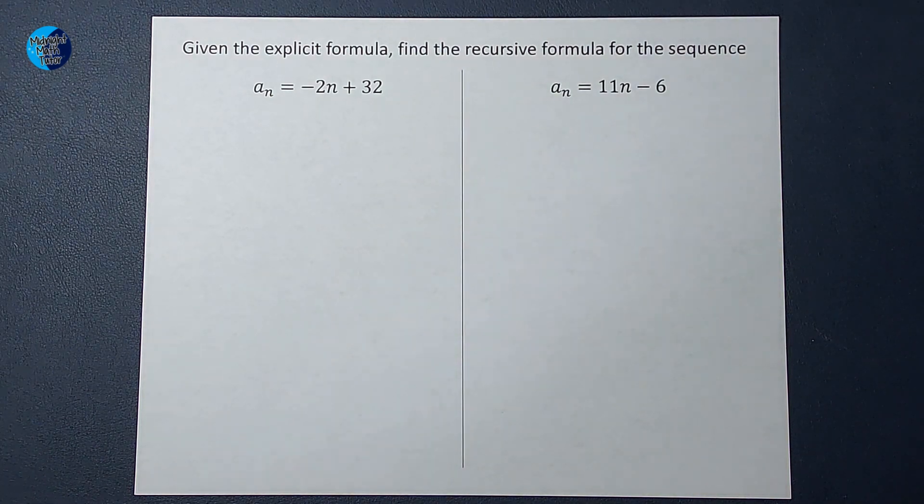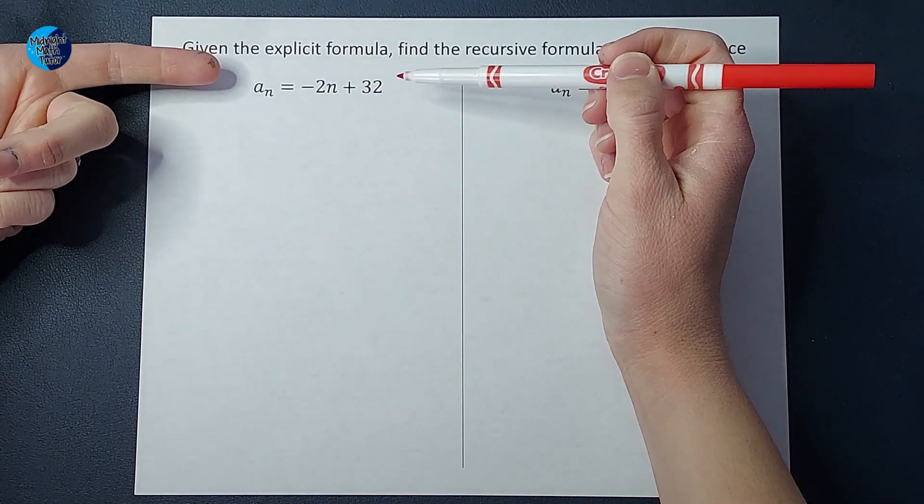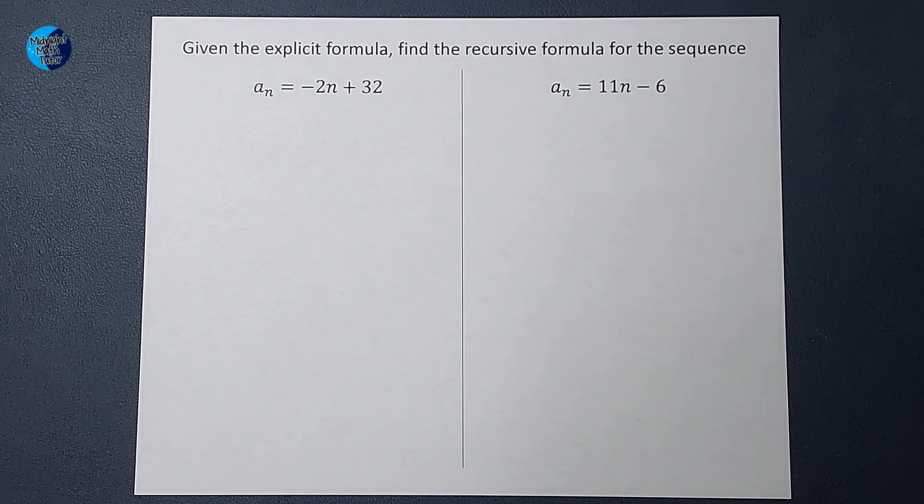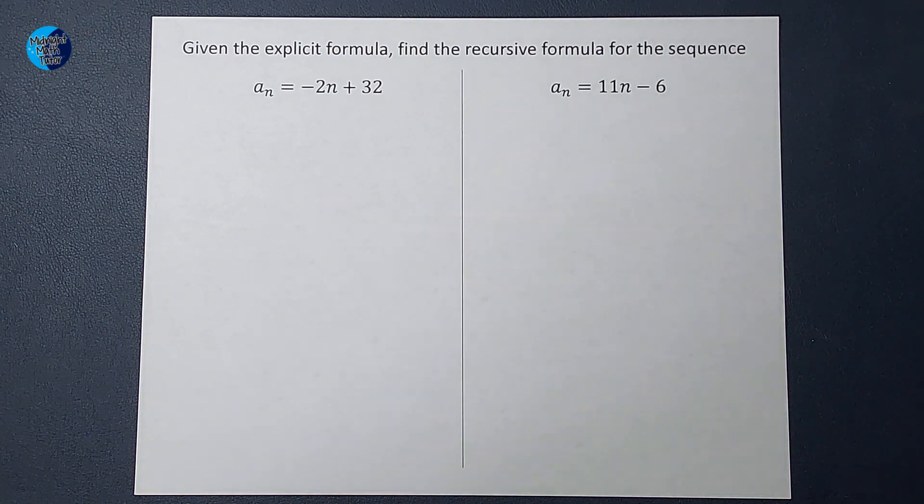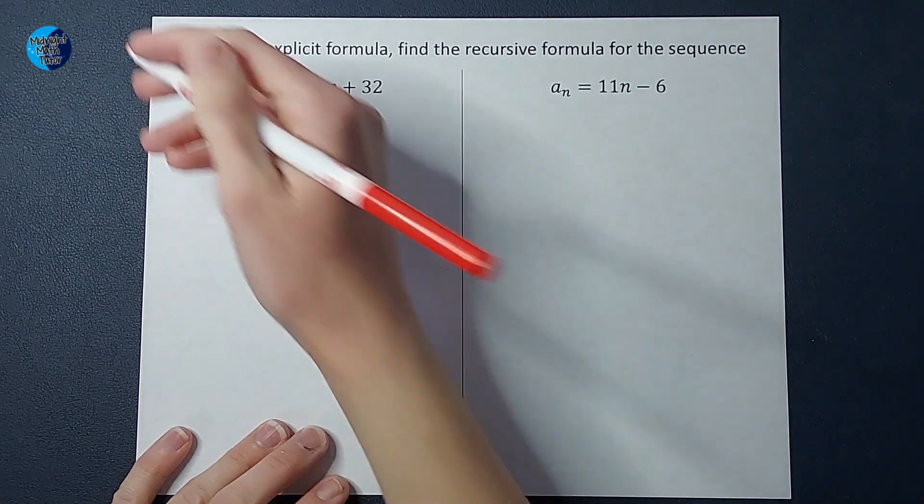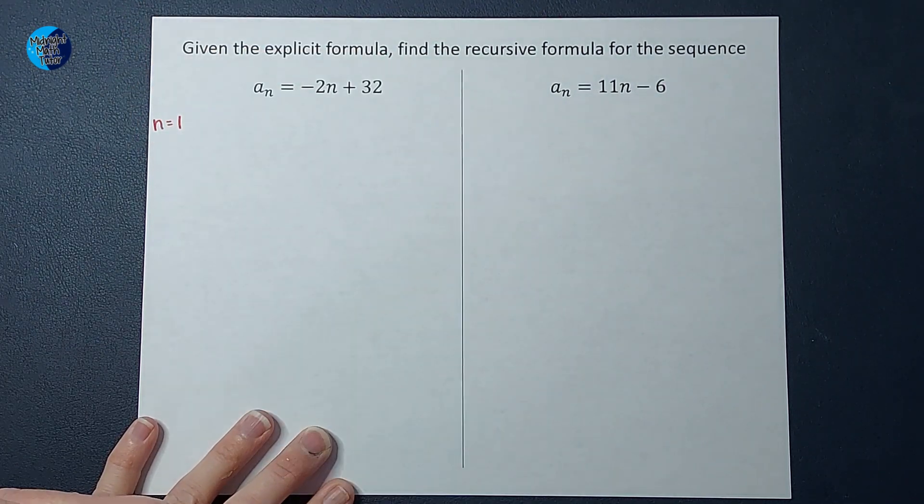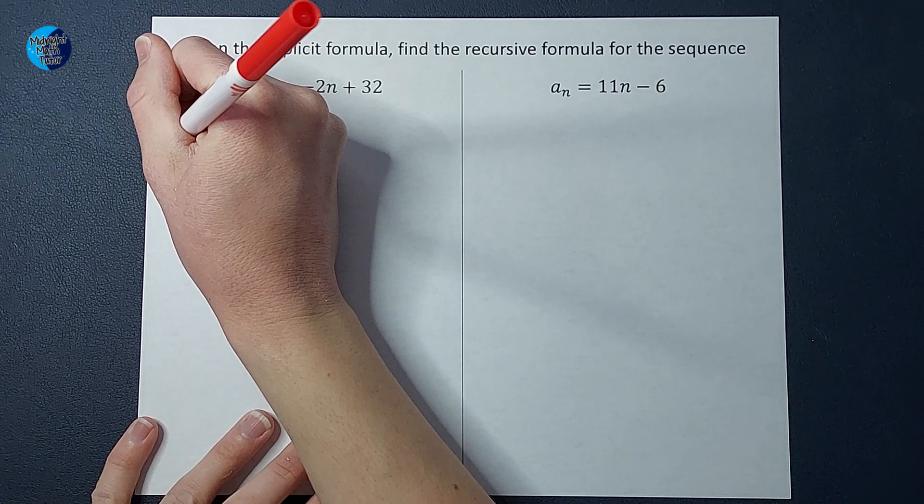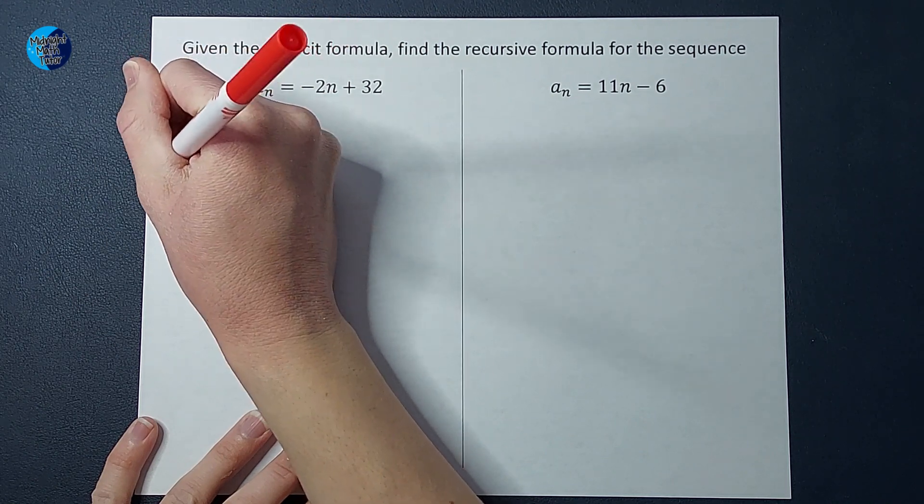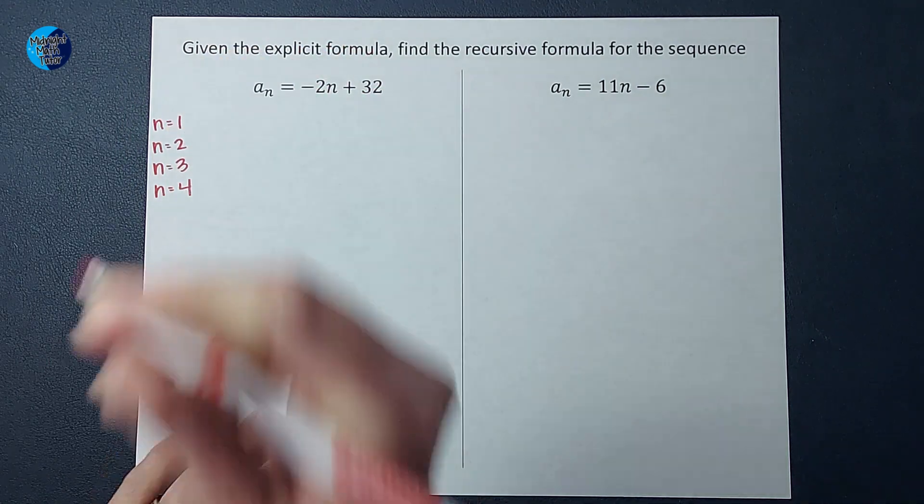So the first thing I am going to do to try and switch this from the explicit formula to the recursive is I want to figure out the first few numbers in my sequence. So for that, I'm just going to plug in some numbers for n. So I want to know the first term in the sequence, which would mean n equals one. And then we can just find n equals two, we can just find, let's just find like four of them. The first four numbers in the sequence.